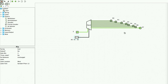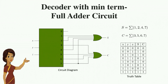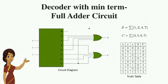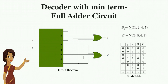Now we will use the 3-to-8 decoder to realize a full adder circuit using minterms. For a full adder, the Sum output is realized by combining minterms 1, 2, 4, and 7 at the decoder output, and the Carry output is the combination of minterms 3, 5, 6, and 7. By ORing these minterms we can realize sum and carry.